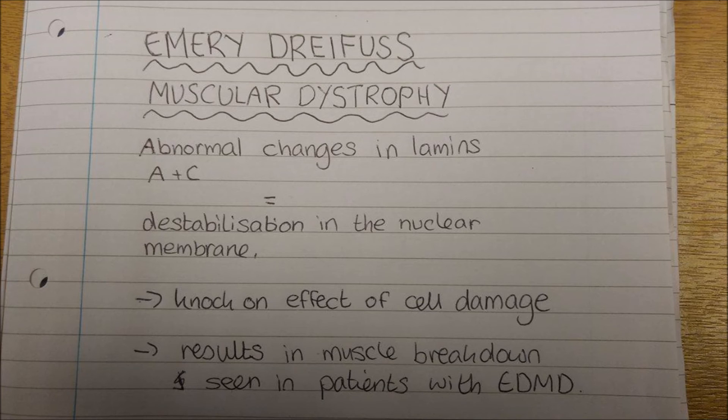Use your knowledge in the role of the nuclear matrix to suggest how a mutation in one of the lamins genes could potentially cause a human disease, such as Emory-Dreyfus muscular dystrophy.